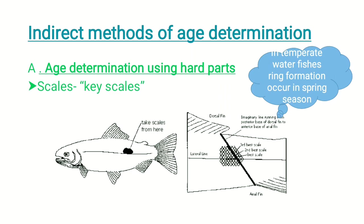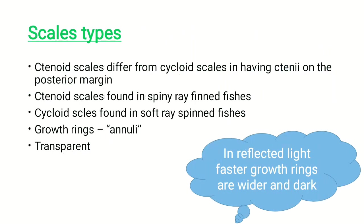In temperate water fishes, ring formation occurs mainly in spring season. After winter, there is a cessation of growth, followed by renewed growth in spring, making ring formation clear and fast. In tropical water fishes, however, there are fluctuations between seasons, and ring formation cannot be seen as clearly. So there are variations in ring clarity between tropical and temperate water fishes.